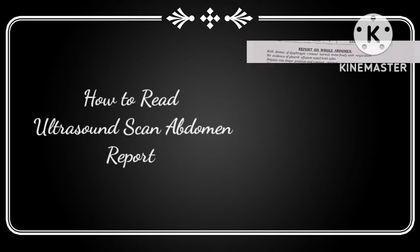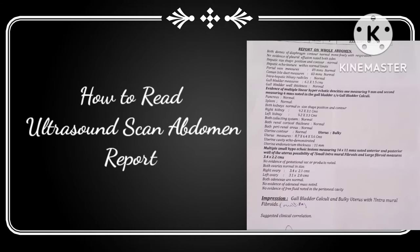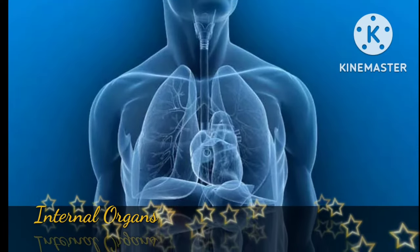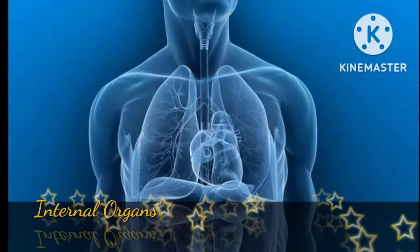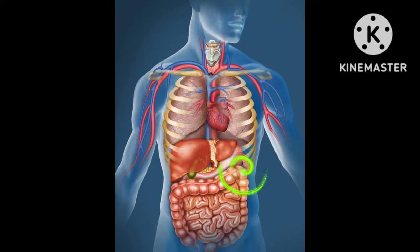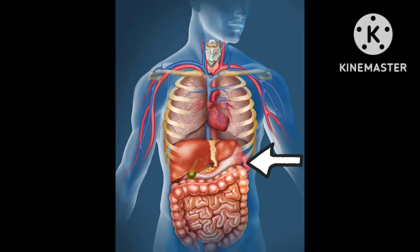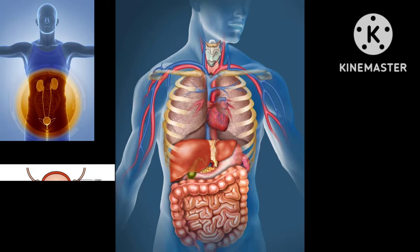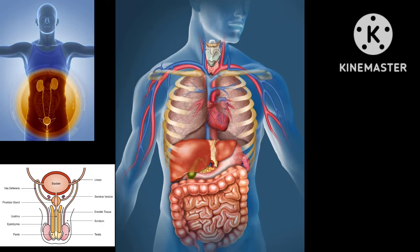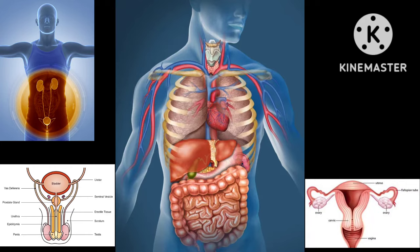Hello everyone, today I am going to explain how to read ultrasonography. Ultrasound abdomen is used to evaluate the structure of internal organs like the abdomen, liver, gallbladder, spleen, kidneys, male reproductive organs like the prostate gland, female reproductive organs like the uterus, ovaries, and urinary bladder.